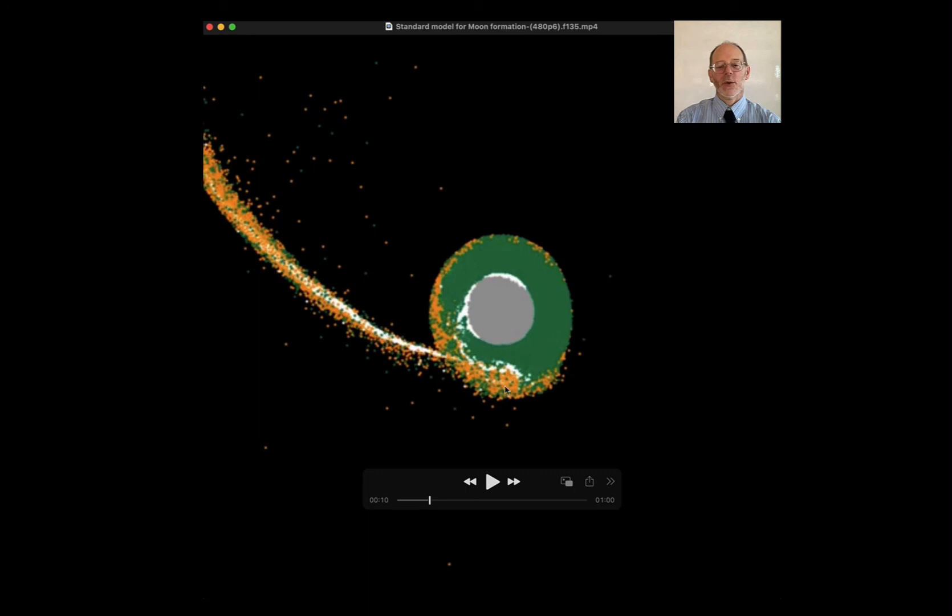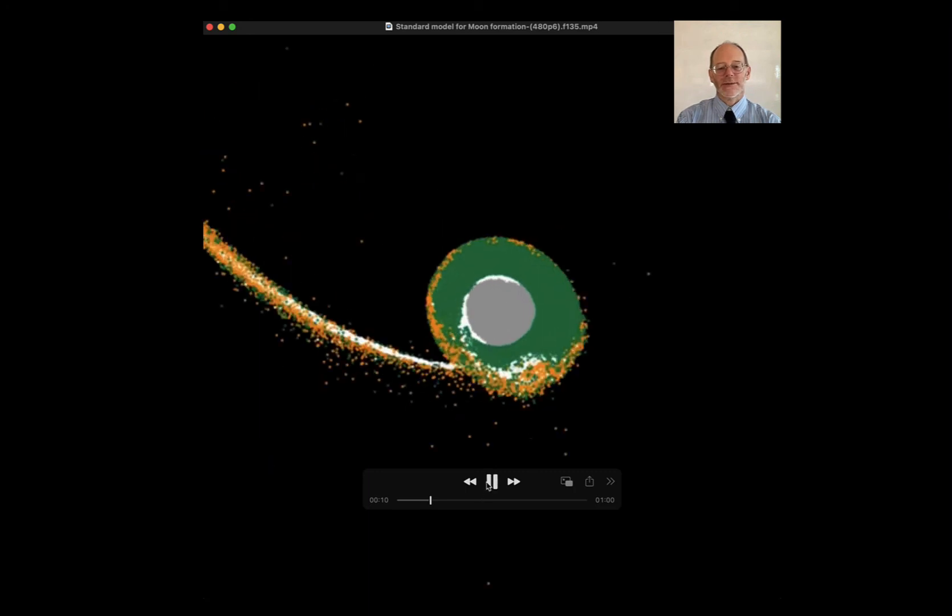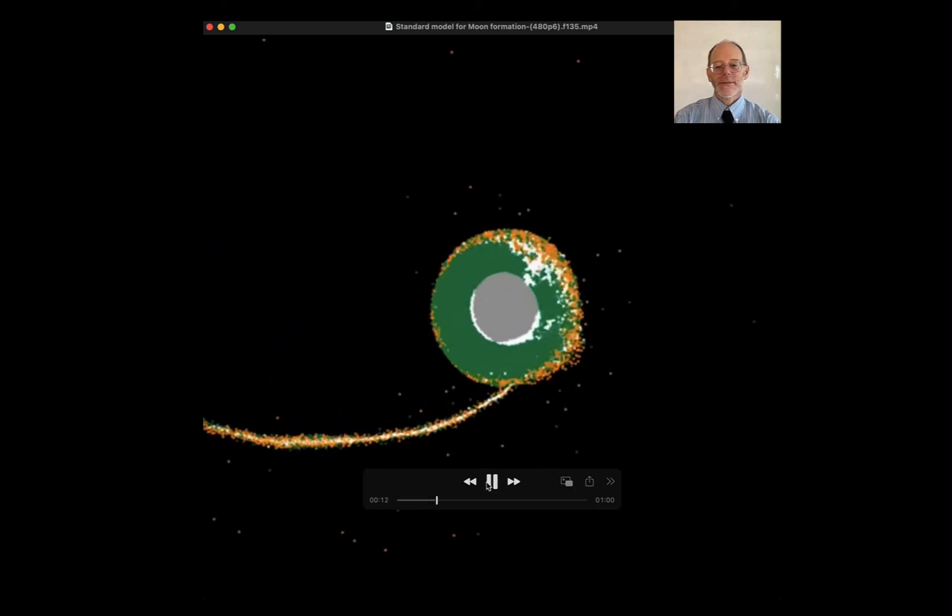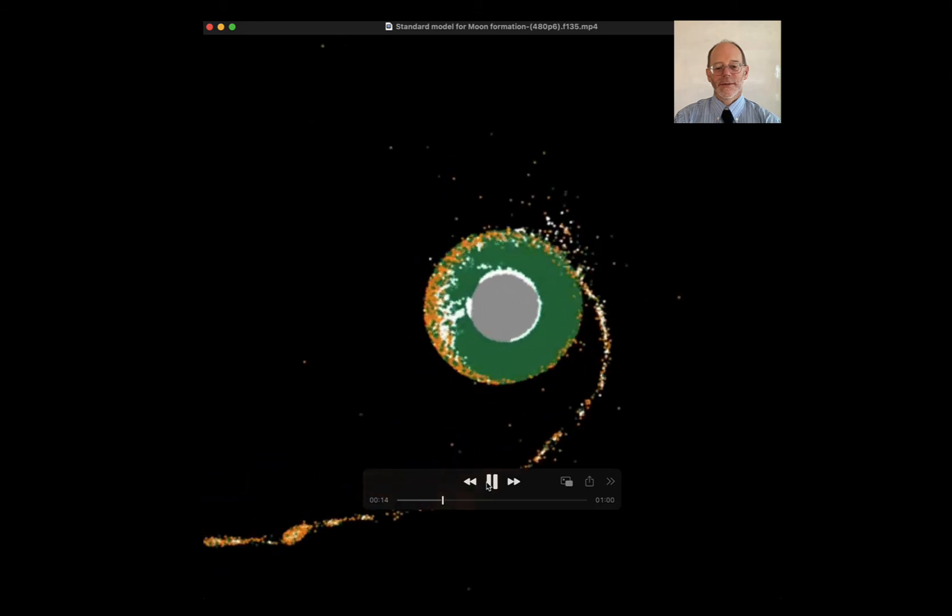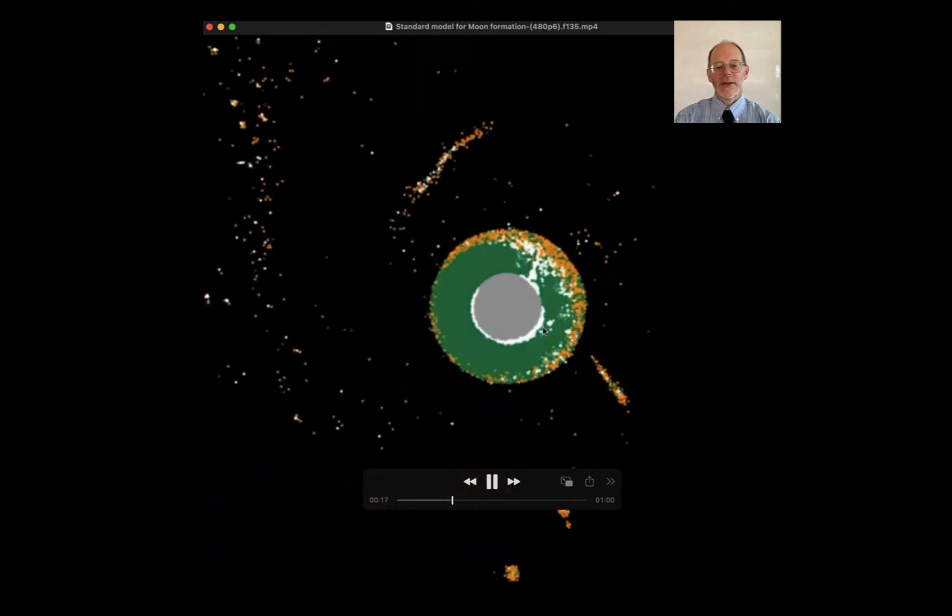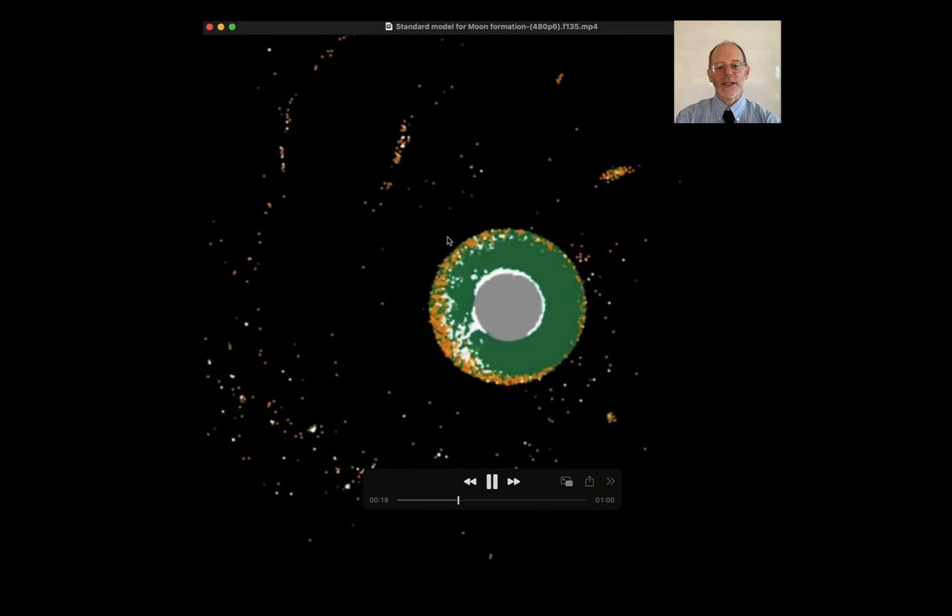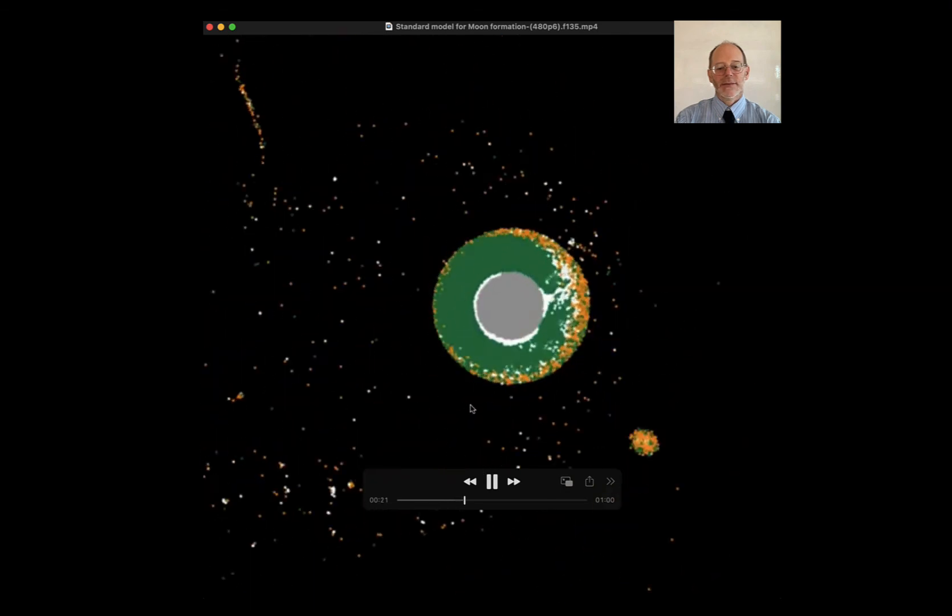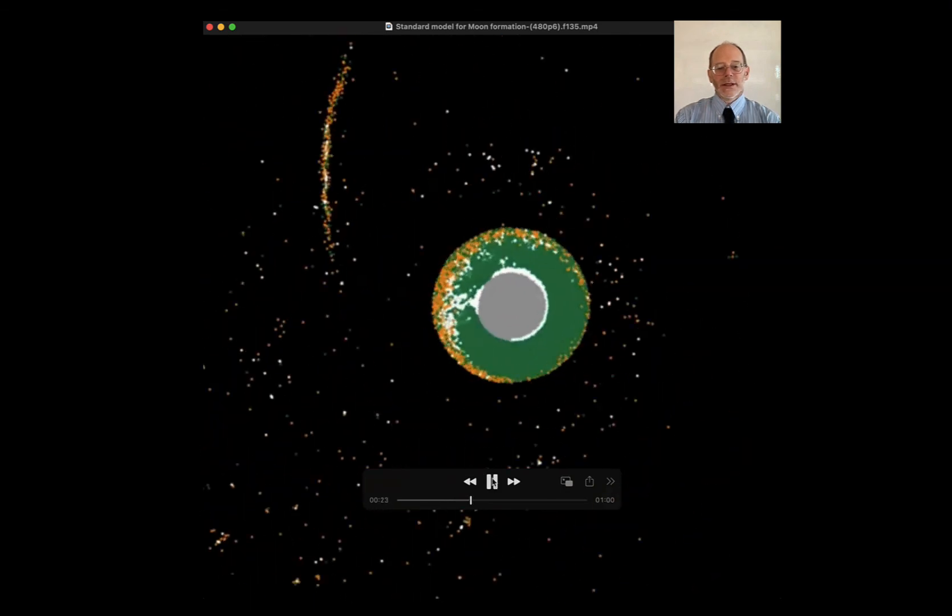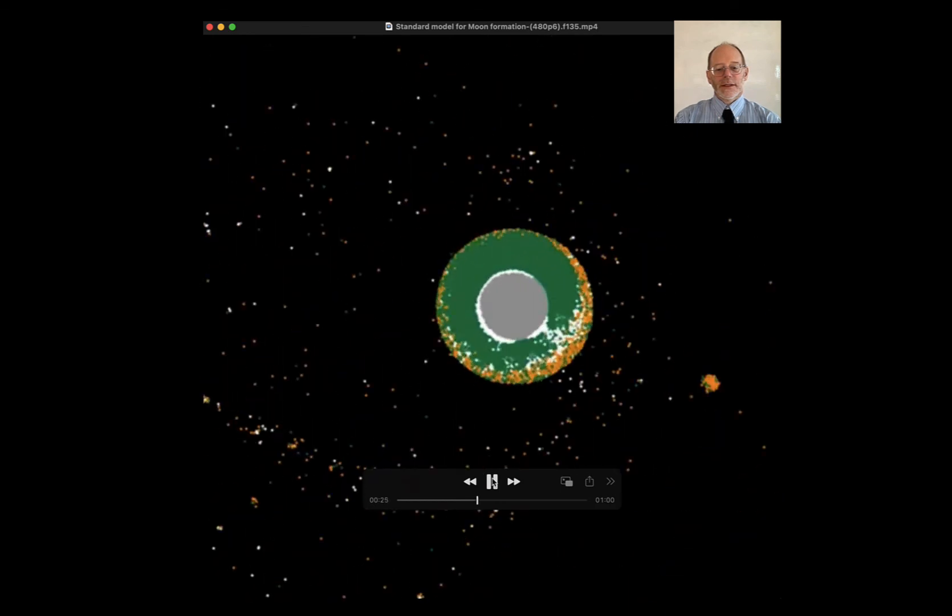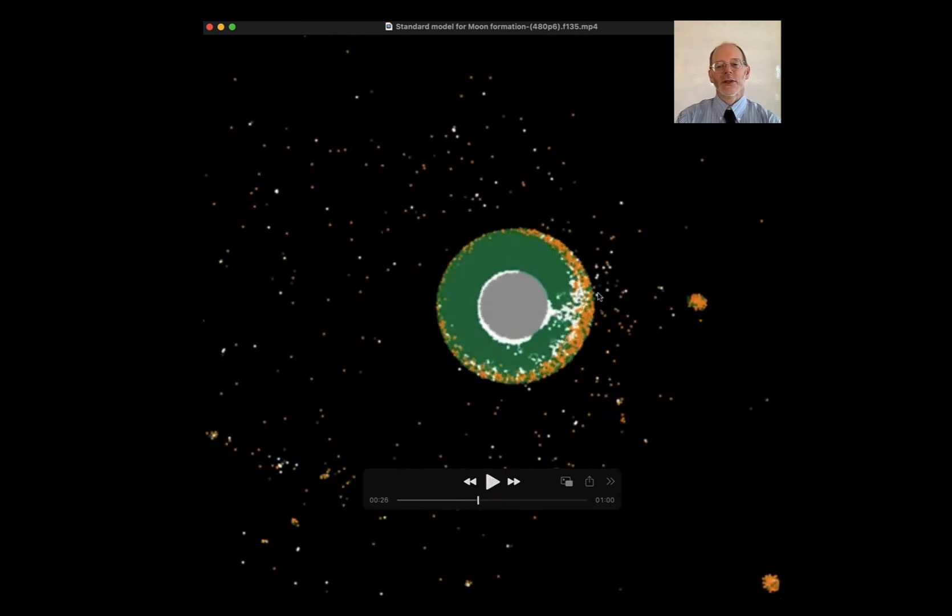But look at where the core is of this impactor. It's close to the Earth. And you can see all of this original core of the Mars size impactor is sinking down into the center of the Earth to form more core material. And then this stuff breaks up into little bodies that then get spread out into little jets. And so eventually what happens is that the Earth, of course, consolidates all of this metallic material sinks in to form the core.